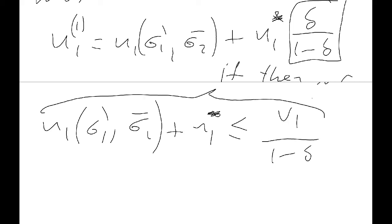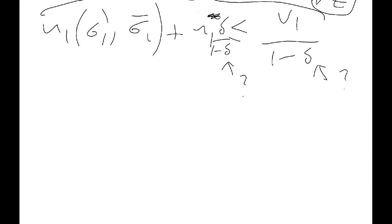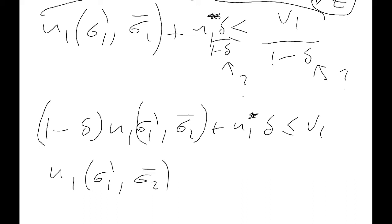So, we want to see the conditions on delta for which this holds. So, we want to see the conditions on delta for which this holds. Okay? So, now we can just carry a very basic algebra and simplify that to this. 1 minus delta u1 sigma1 dash sigma2 bar, just multiplying 1 minus delta out, plus u1 star times delta has got to be less than or equal to v1. And then we can just carry on a little bit. That's going to be u1 times sigma1 dash sigma2 bar minus v1 has got to be less than or equal to delta times u1 sigma1 dash sigma2 bar minus u1 star. Okay?